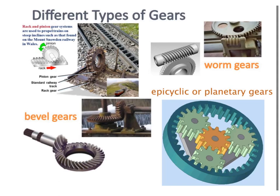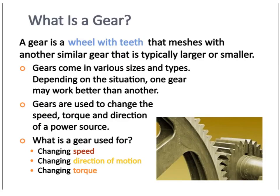The one we're mostly going to be going over in this video is spur gears. A gear is a wheel with teeth. They're typically going to be meshed with other gears that are larger or smaller, depending on if you're wanting more torque or more speed. Gears are used for either changing speed, changing direction of the motion, or changing the torque.